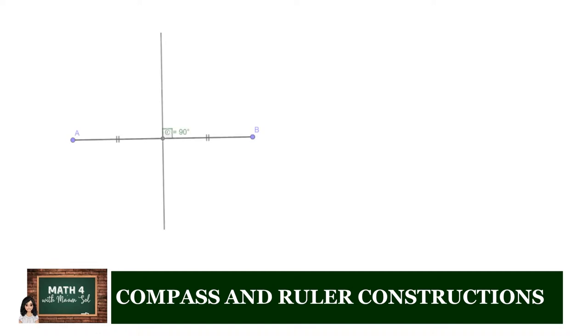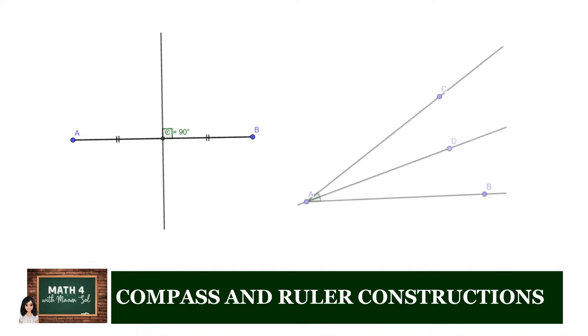Recall that in your first quarter lessons, the perpendicular bisector of a segment is the line, ray, or segment that divides the segment into two congruent segments and is perpendicular to it. Moreover, the angle bisector of an angle is a line, ray, or segment that divides a given angle into two congruent angles.